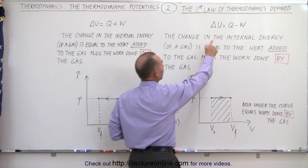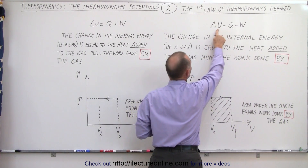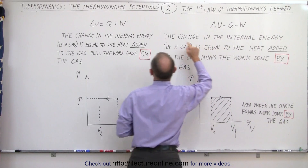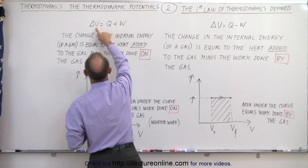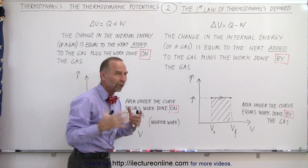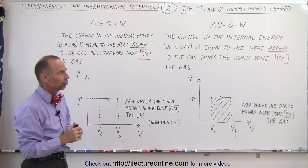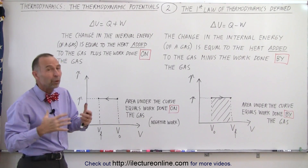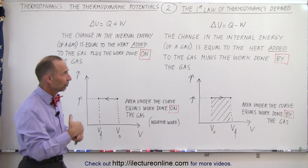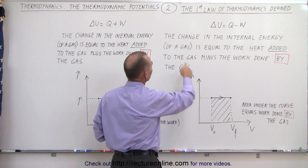We had it written as delta U, which is a change in internal energy, is equal to Q minus W, and we had it written as delta U equals Q plus W. So what is the difference? Why do we have two definitions? Well, they're both valid and we need to understand the differences.